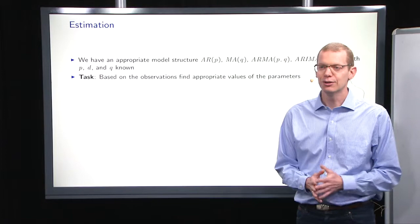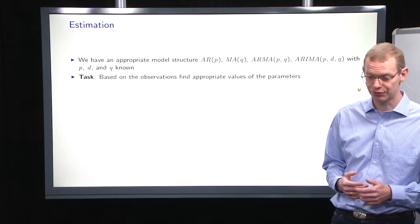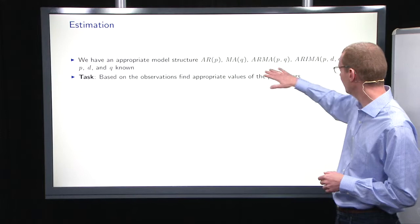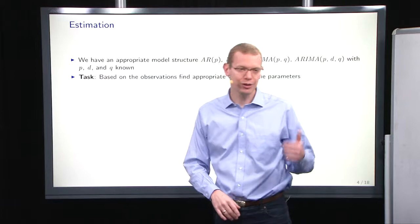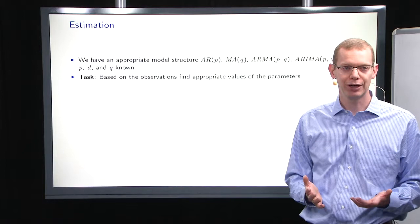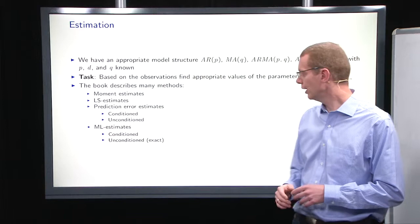What we looked at in the past is how to specify a potential appropriate model structure — autoregressive, moving average, ARMA, or ARIMA. We won't talk too much about ARIMA today, but what we'll say is that we'll now assume that we know the orders p, d, and q. Now the task is: how do we find the appropriate parameters?